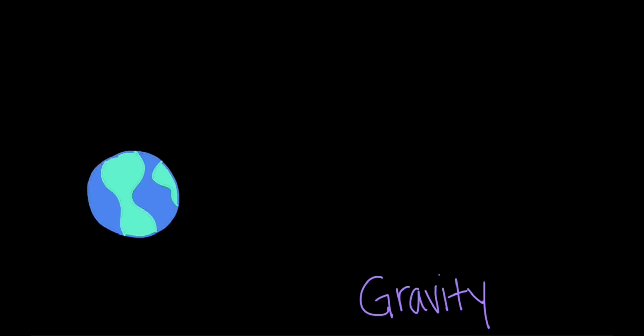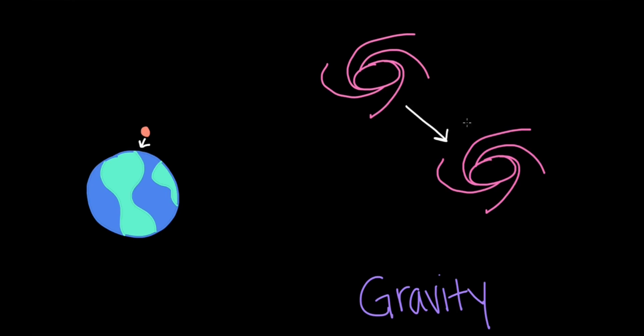This is the same as the gravity that makes a ball fall back to the ground when you toss it up into the air. Gravity is a force that operates between two objects that have mass and tries to pull them closer together, whether those objects are a ball and the Earth or two galaxies.